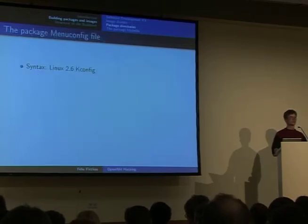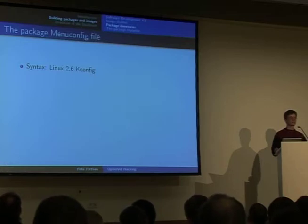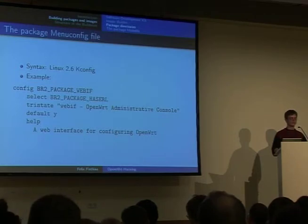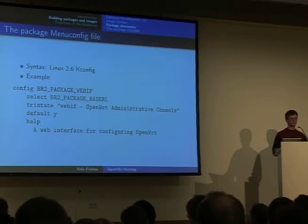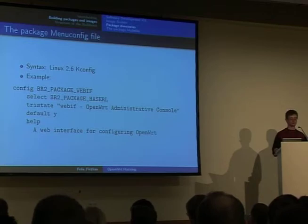Now let's continue with the first file in a more in-depth look. The syntax is, as I already mentioned, the Linux 2.6 kernel configuration format. And this is an example of what it looks like for a standard package. The first line defines the config entry. By convention, all configuration names for packages start with BR2, which refers to the build root 2 of the user libc build root that we got some of our code from.